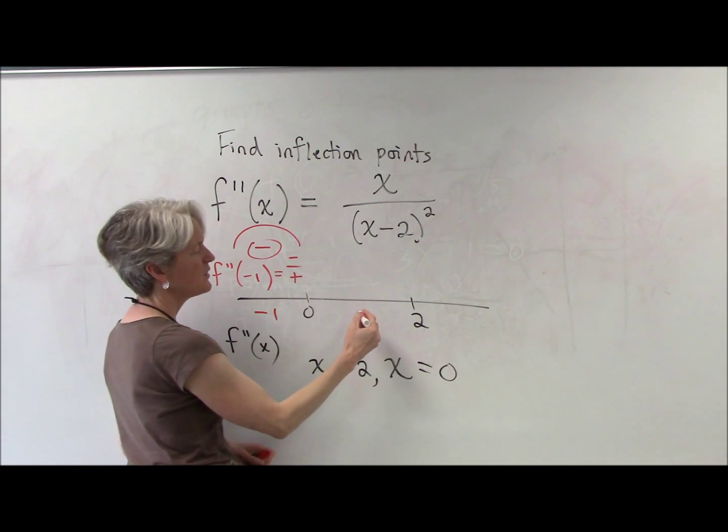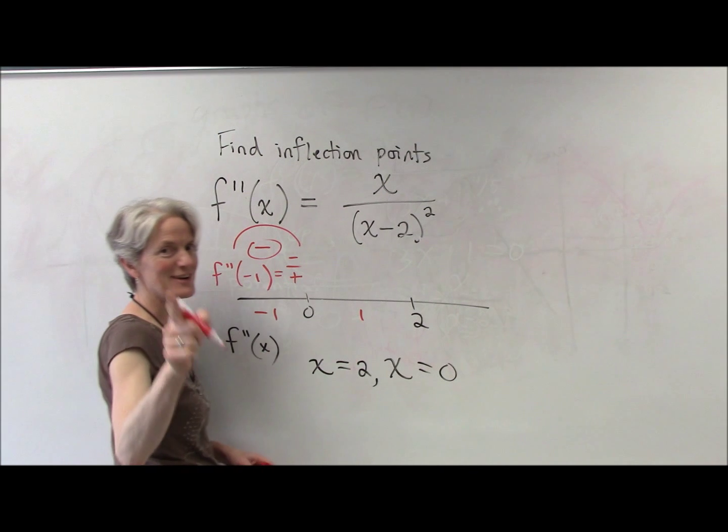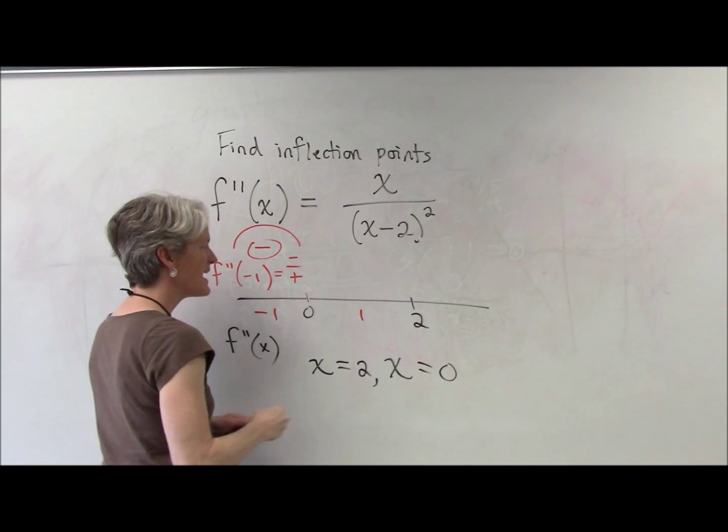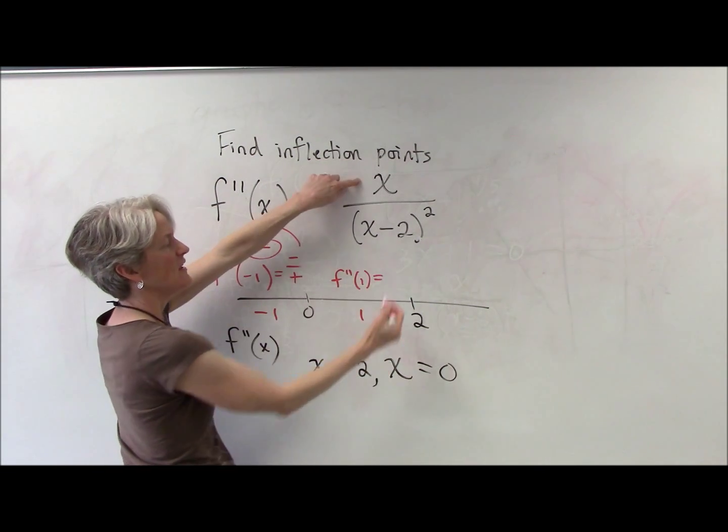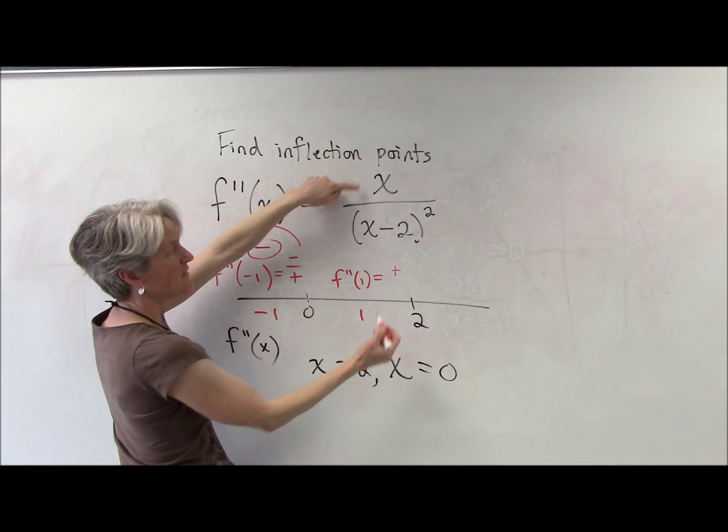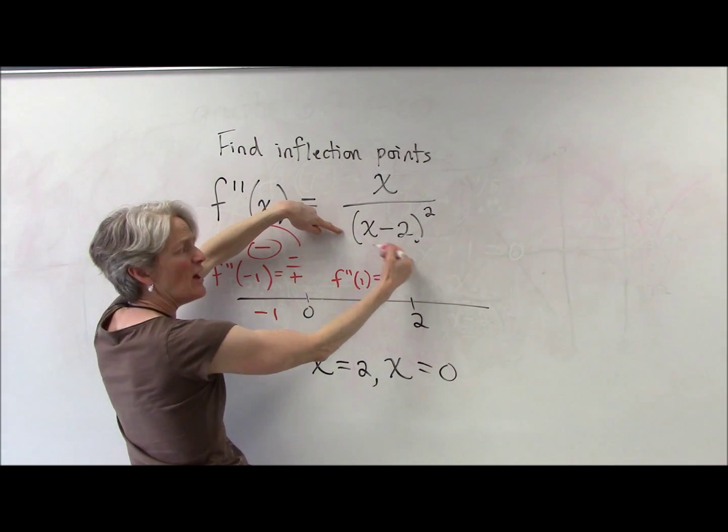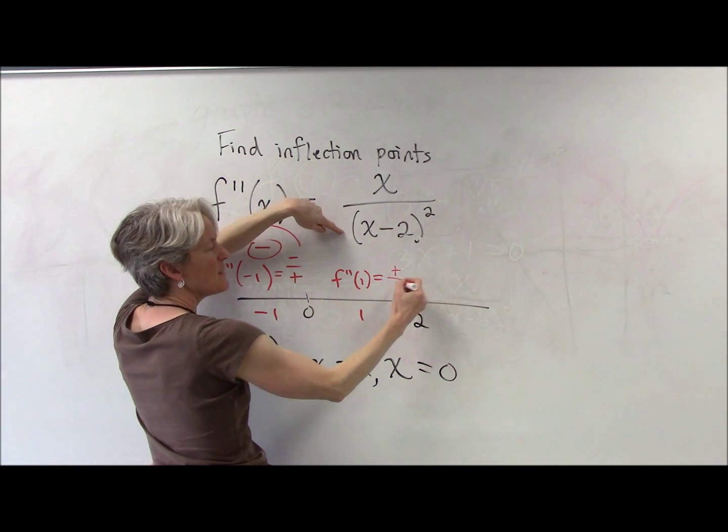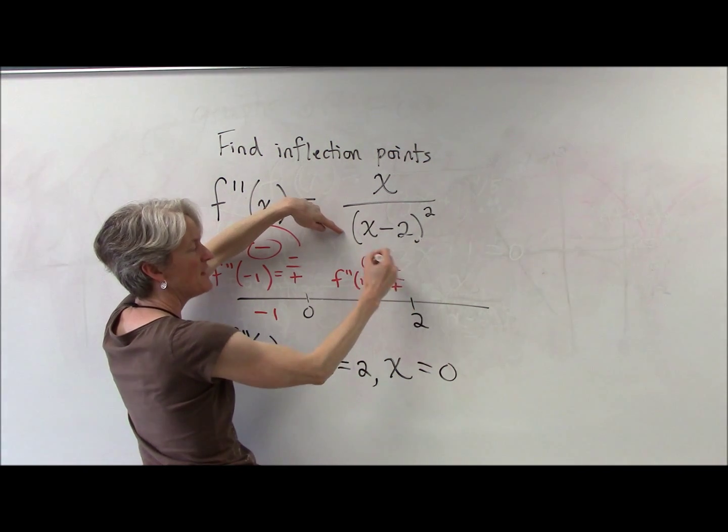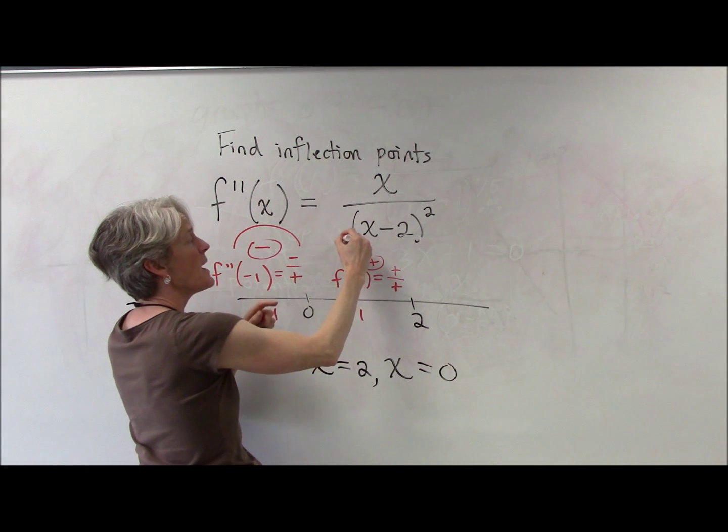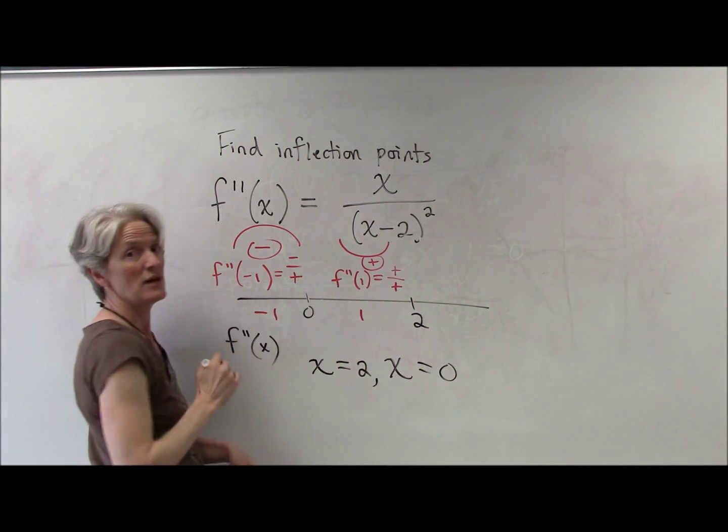Give me a number between zero and two. One. I knew you were going to guess one. Okay. So, now I'm going to do the same thing, but I'm putting one into my second derivative. I think we can agree that's positive in the numerator. Again, I'm squaring the denominator. I'm going to get something positive. Positive divided by positive is positive. Second derivative is positive. So, my original function is concave up.